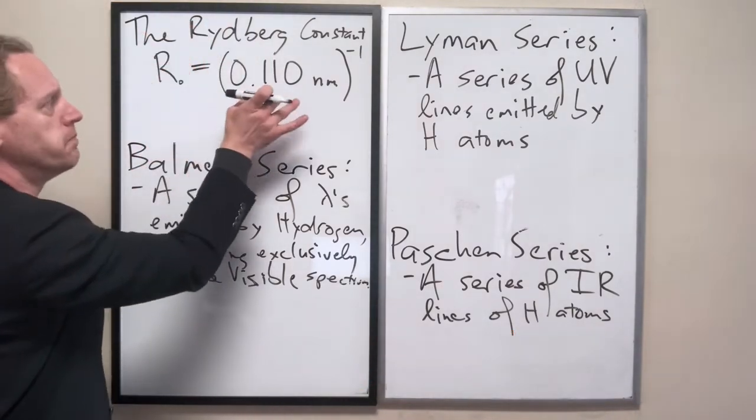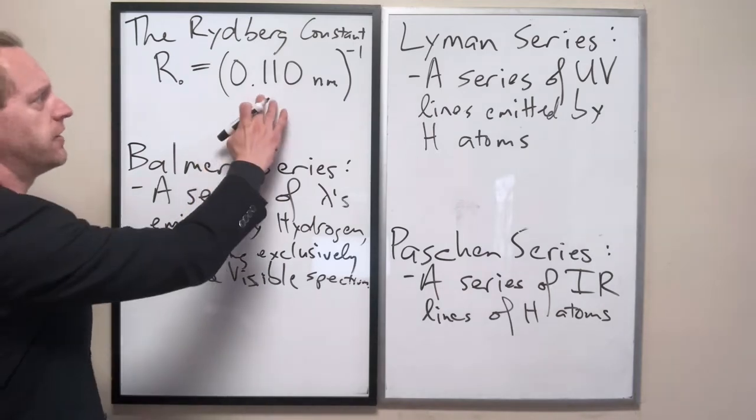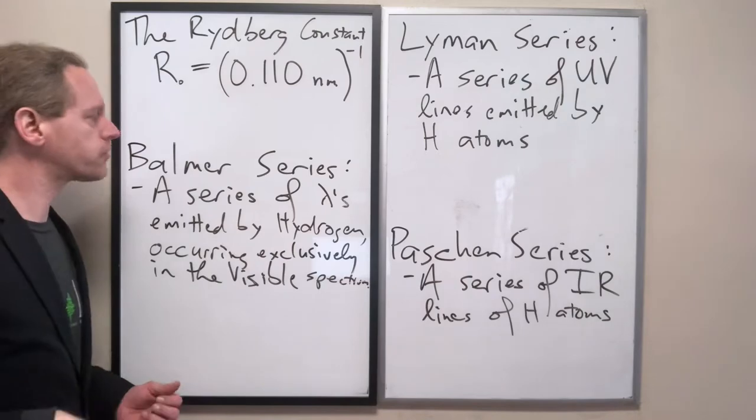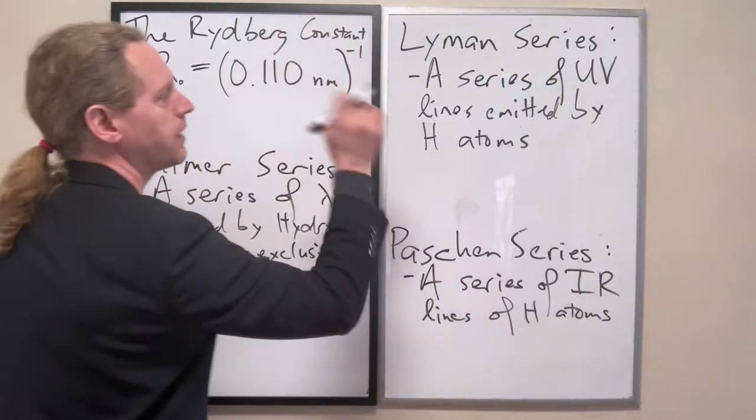This is just a numerically measured constant that's trial and error - you just try different values until they fit all three of these series. So let's start with the Lyman series here.